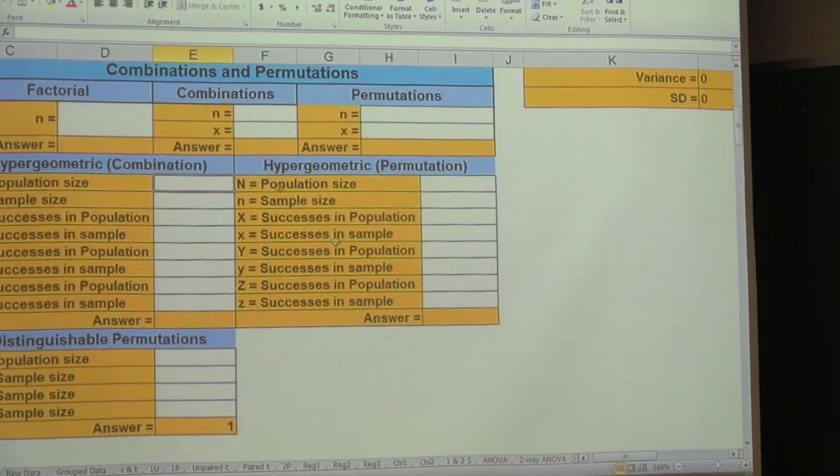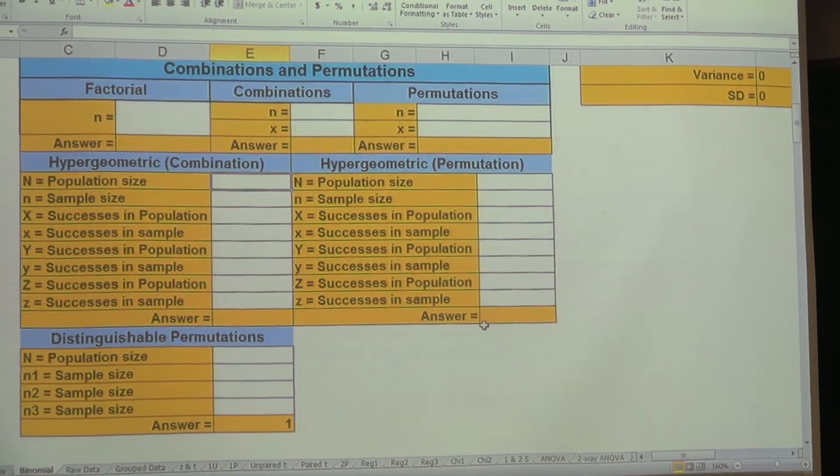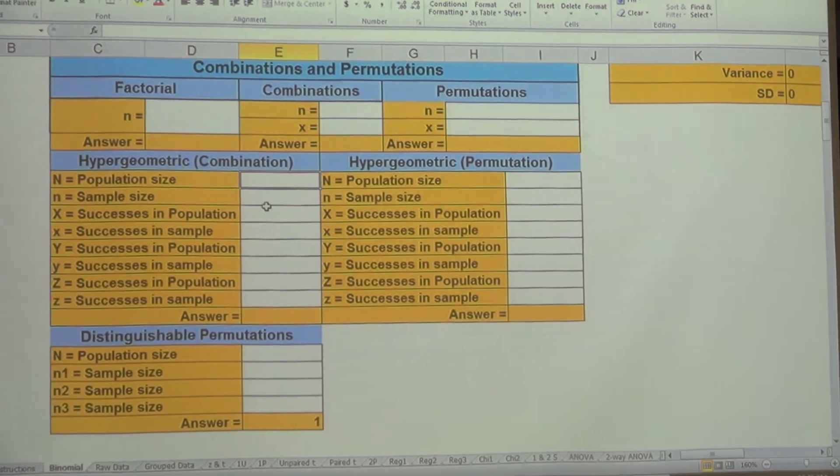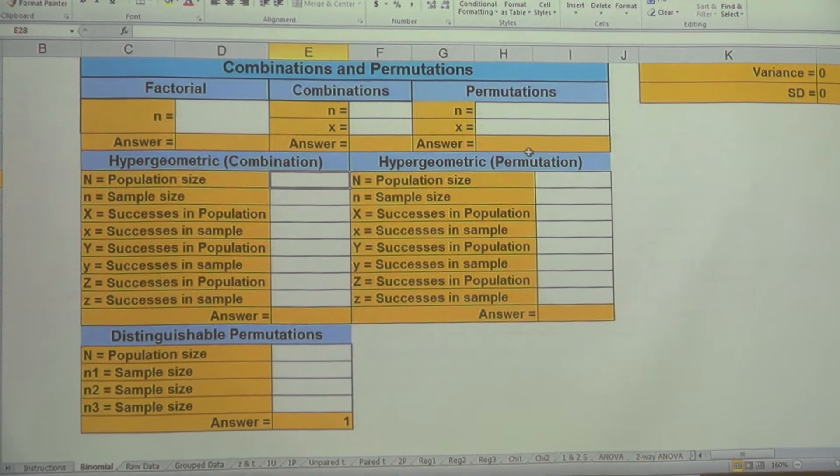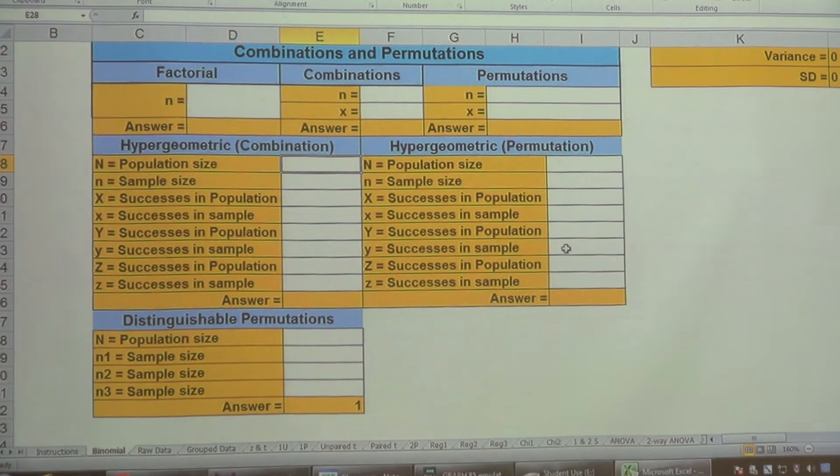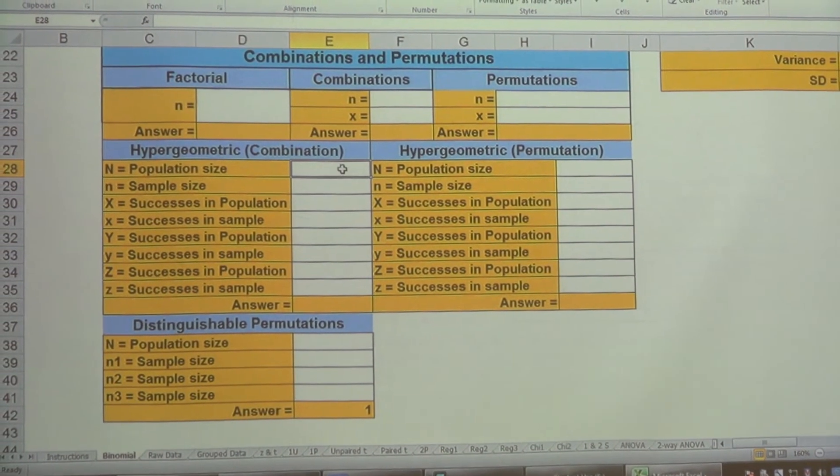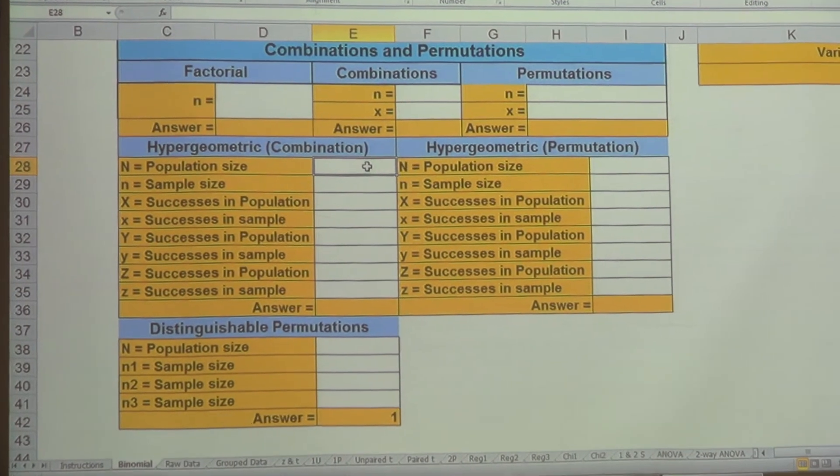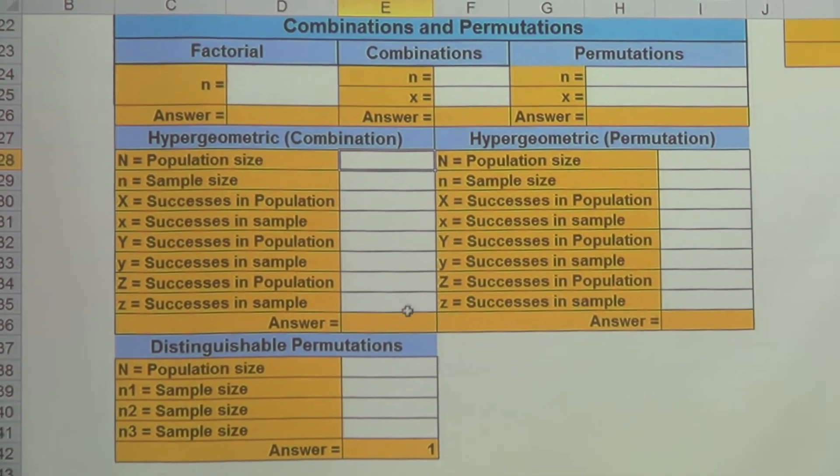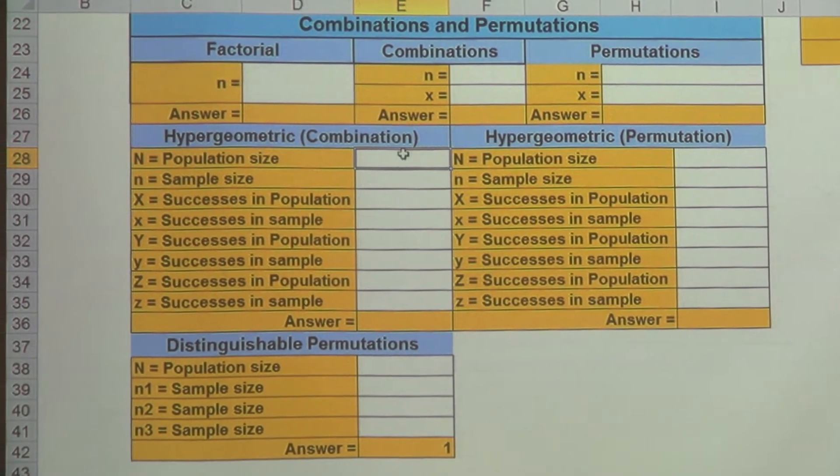We're in this area right here. This has hypergeometric combinations and permutations. Combinations is when order doesn't matter. Permutations is when order does matter. On this one, we don't care the order of the three California people. So this is the area that we'll be using for the first problem.